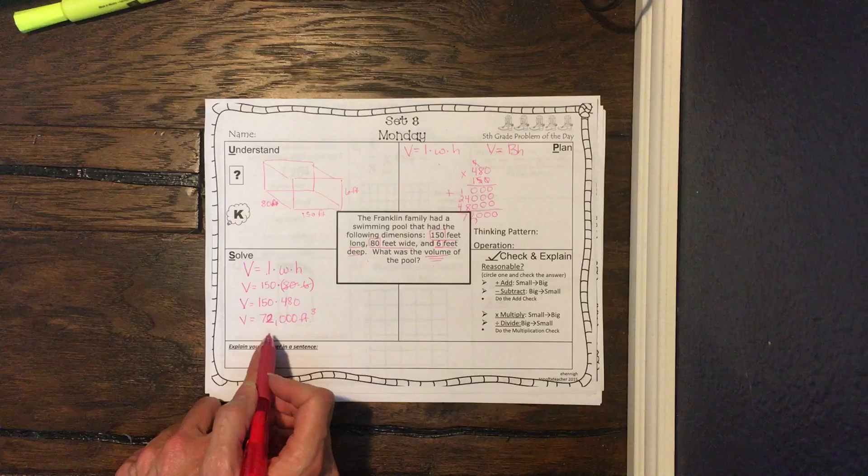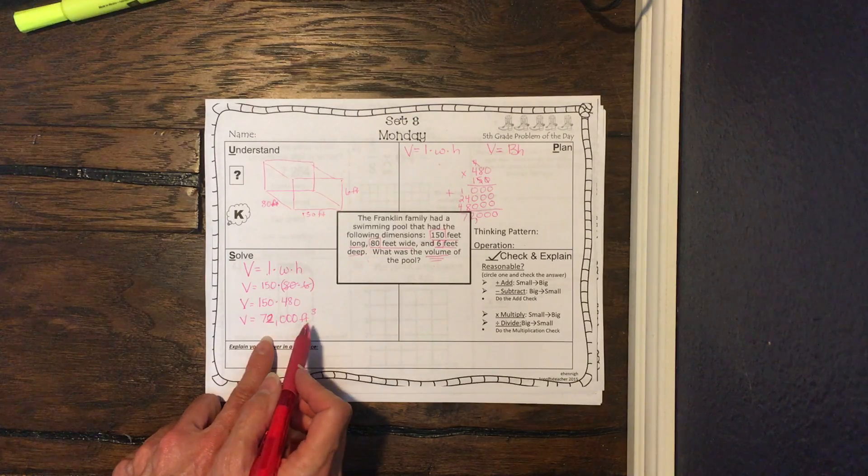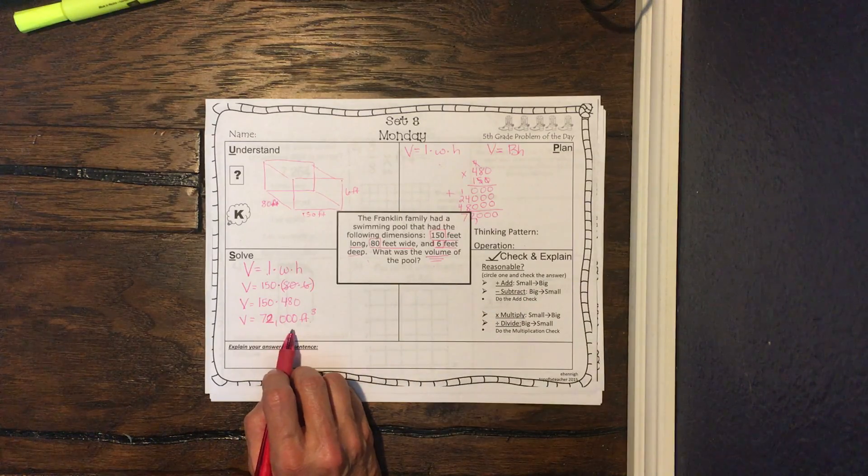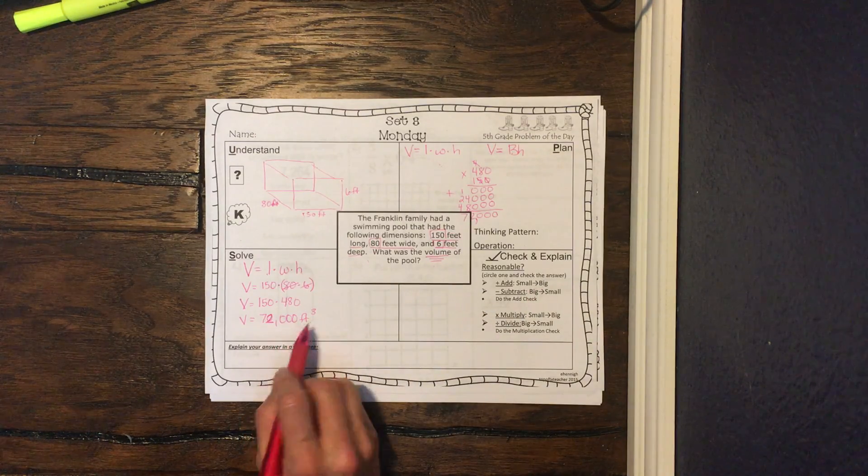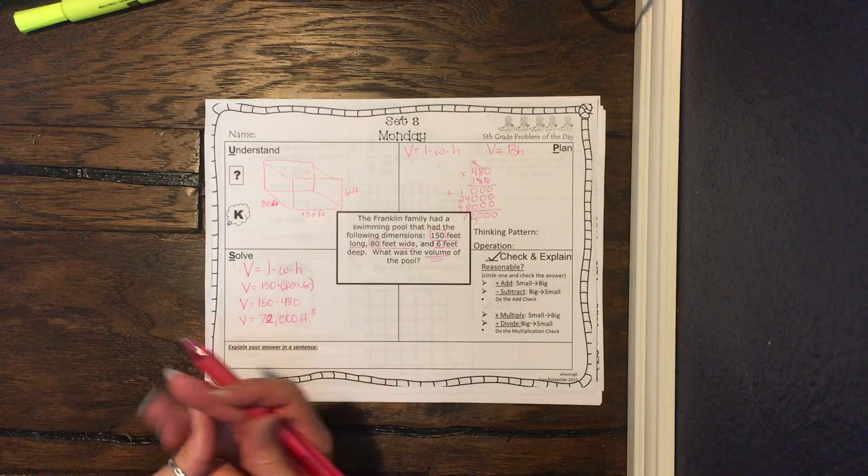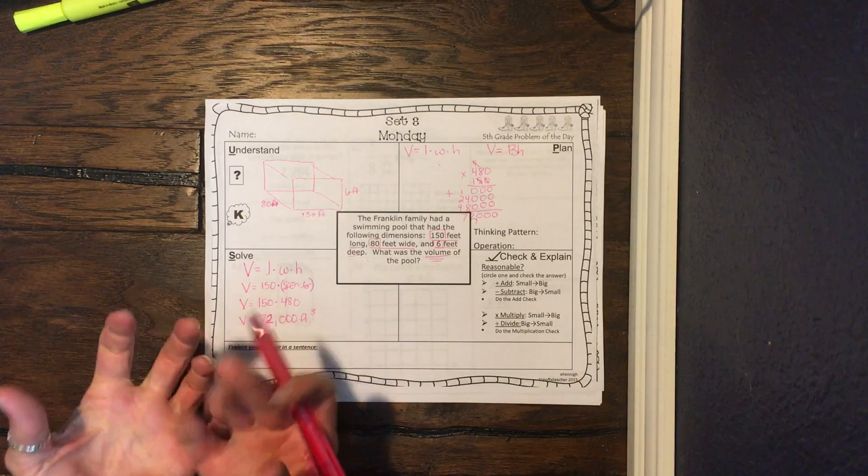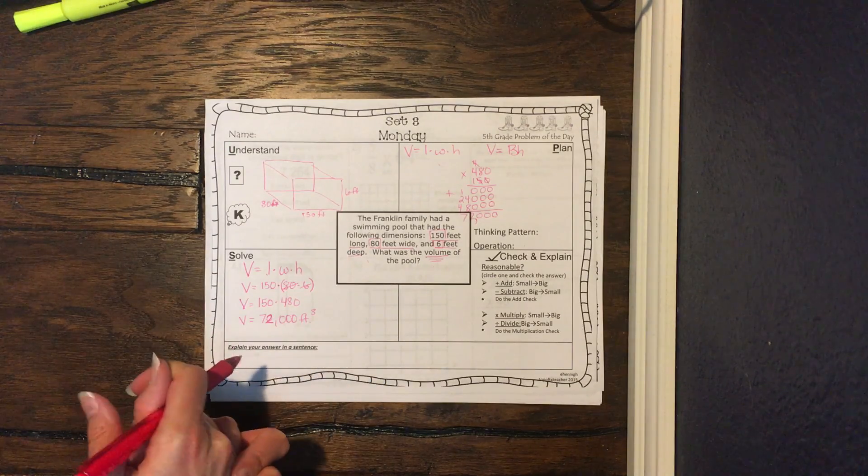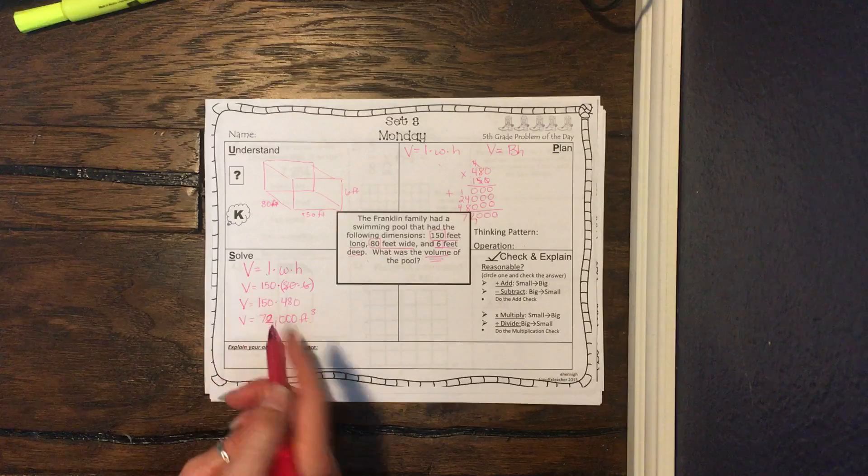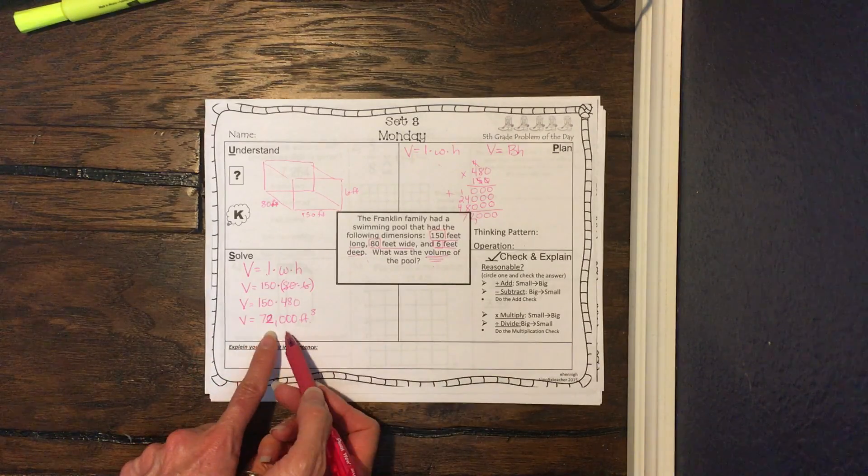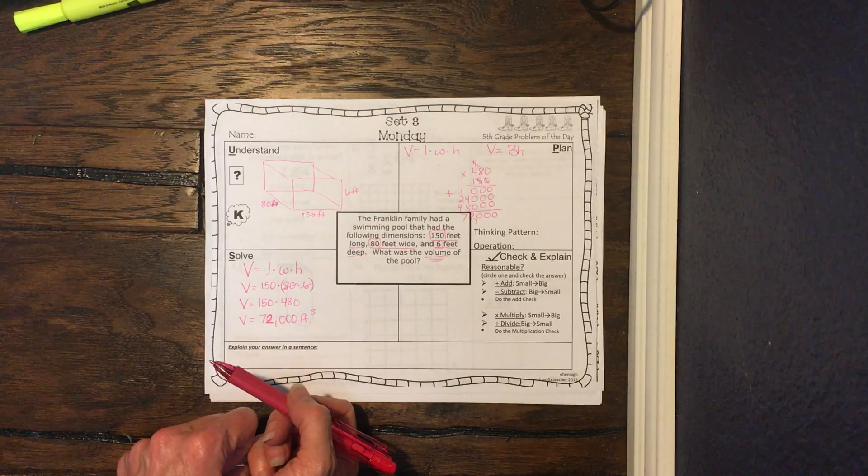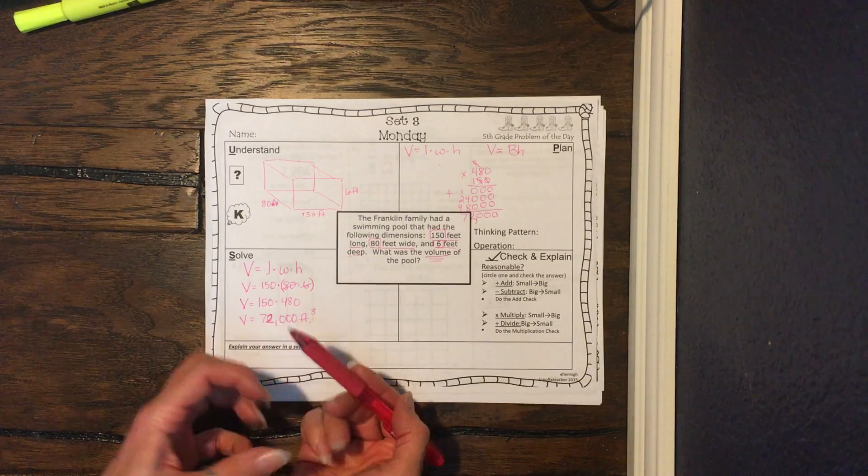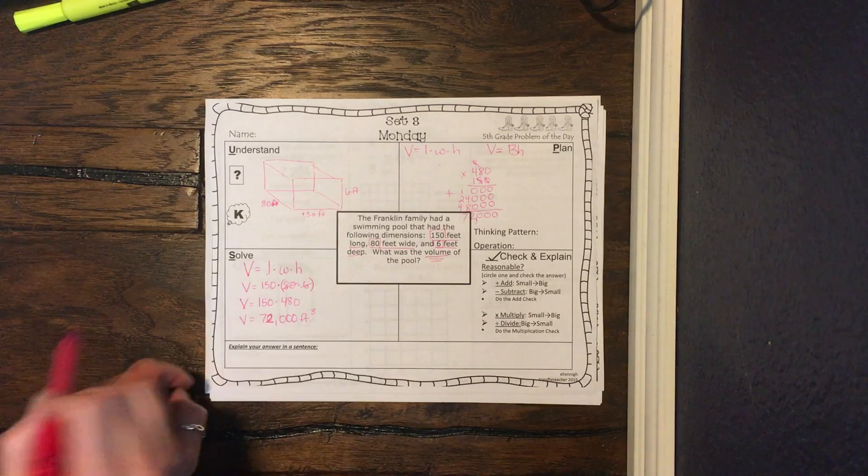So the volume of our pool is 72,000 feet cubed. So then we look here and we say, is this a reasonable answer? So if we had a pool that was this big, think about how big a swimming pool is, right? How many feet of water is that going to hold? A lot. So you know that number is going to be a pretty big number. So if we would have gotten 720, that's not going to be big enough to fit a pool. We knew that we multiplied. So we know our answer is going to be much bigger than what we started with.